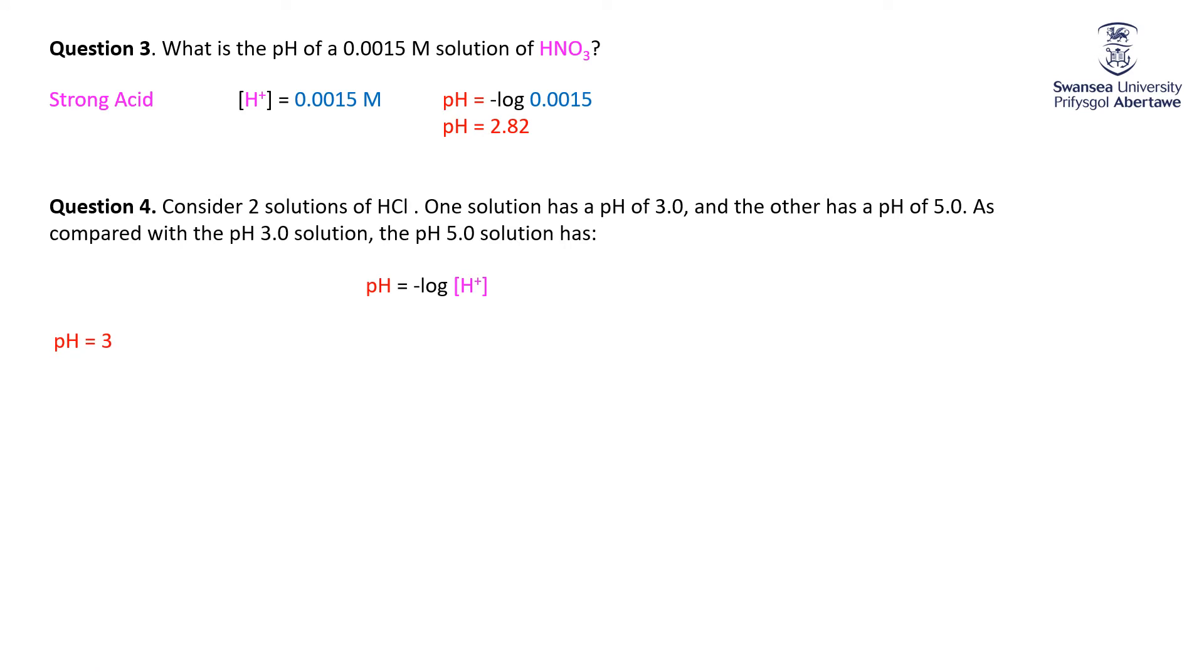So pH is minus the log of H-plus. So pH of 3, that means the log of H-plus is minus 3. Or in other words, the H-plus is 10 to the power of minus 3, 1 times 10 to the minus 3. So the pH 3 solution, H-plus is 1 times 10 to the minus 3.